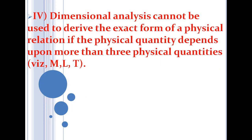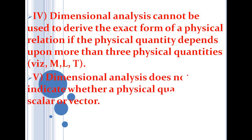The fourth drawback is that if a relation includes quantities other than mass, length, and time, we cannot derive the exact relation using dimensional analysis. The fifth drawback is that dimensional analysis does not indicate whether a physical quantity is a vector or a scalar — it gives no information about vector or scalar nature.